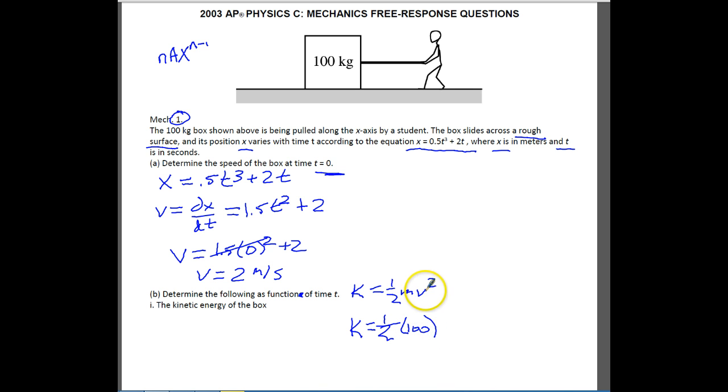And then v, if you remember, v is this equation right here. So we need to plug it in. And it's going to be 1.5 t squared plus 2. And that whole quantity squared. 1 half of 100 would be 50. So we have 50 times (1.5 t squared plus 2) squared. And that is our solution for the kinetic energy of the box.